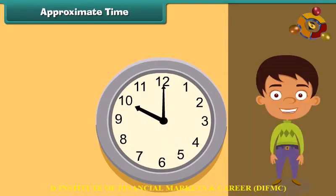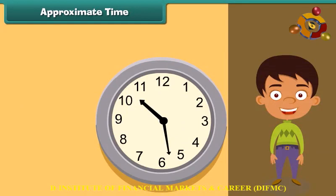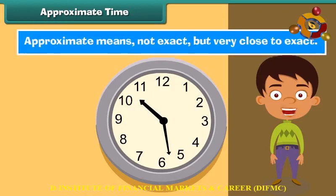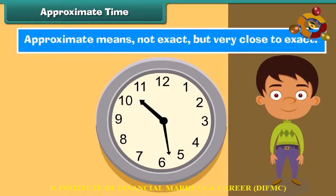Approximate time. Look at the clock face. Can you tell the time? It is not yet 10:30, but it is very close to 10:30. So the approximate time is 10:30. Approximate means not exact, but very close to exact.